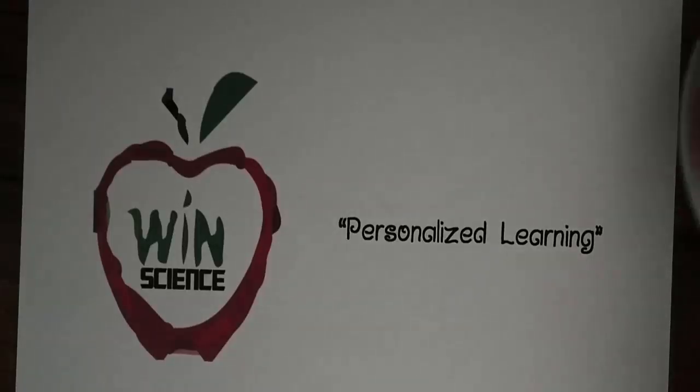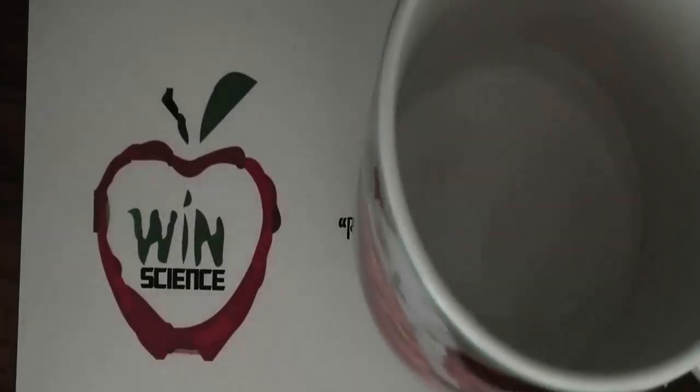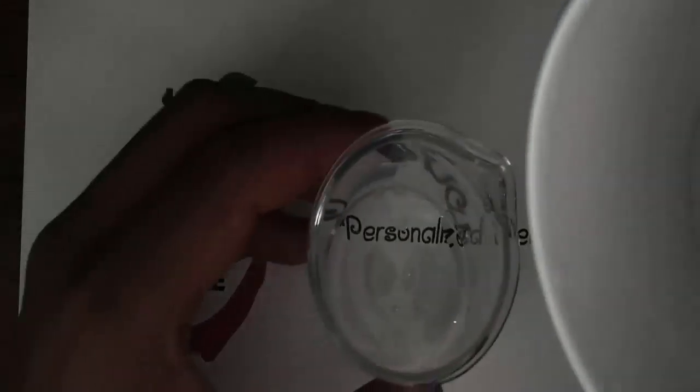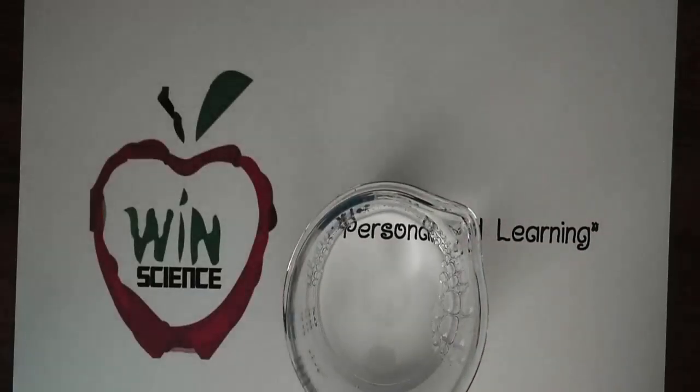Let's look at some examples. Here I have a cup of water. This water is basically purified water, and minerals have been added for taste. So this is where I get the water from.